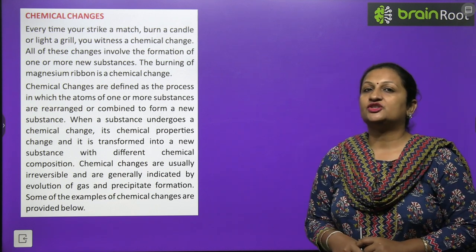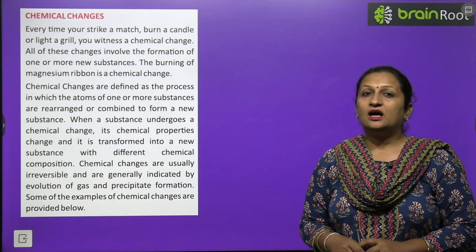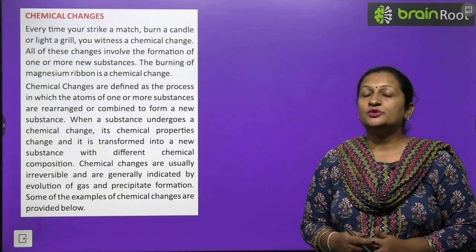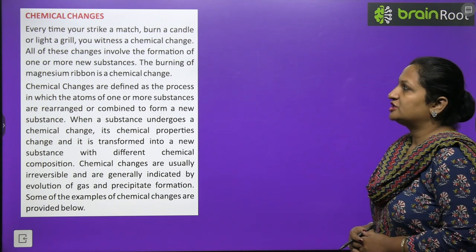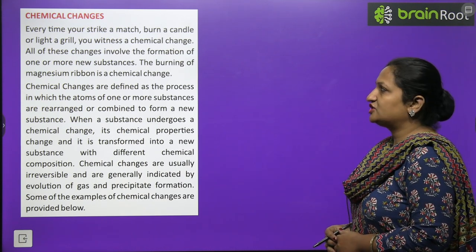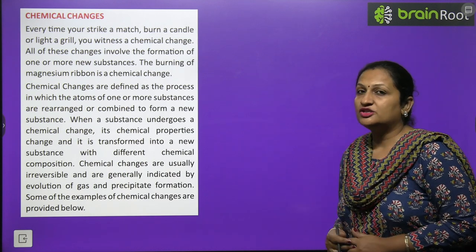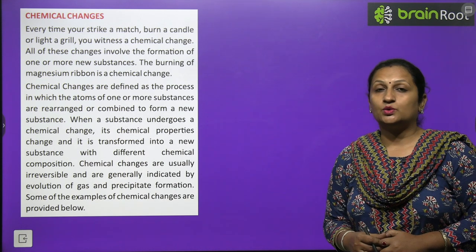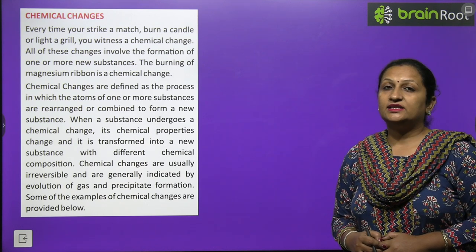Chemical change: there are many changes in nature that we cannot reverse - these are permanent and irreversible changes. In these changes, new substances are formed, and the composition of the new substance is different from the original. Every time you strike a match, burn a candle, or light a grill, you witness a chemical change. Chemical changes involve formation of one or more new substances. They are irreversible and permanent.